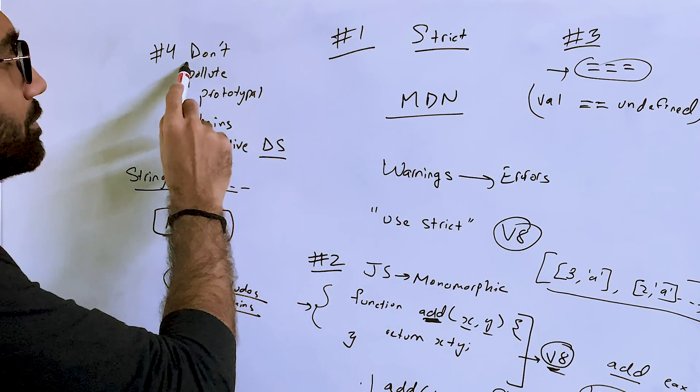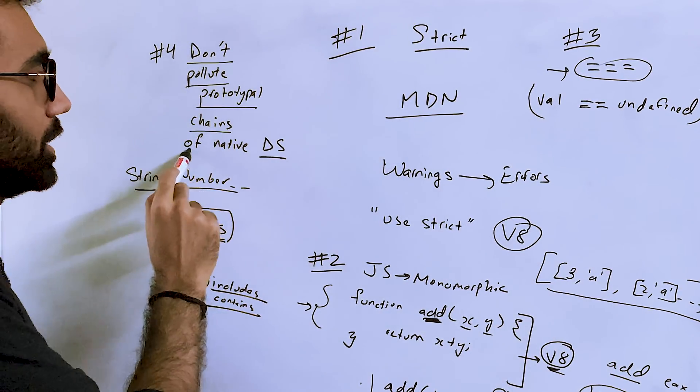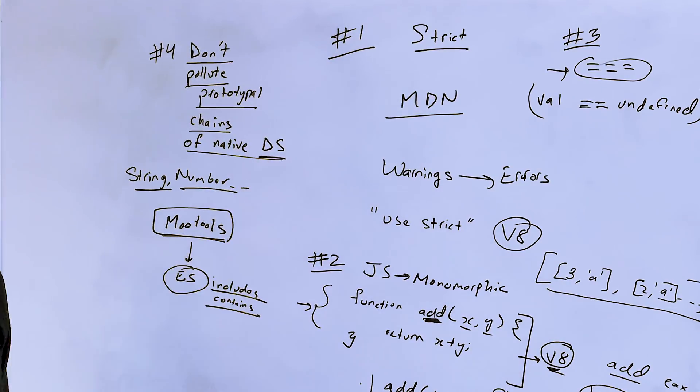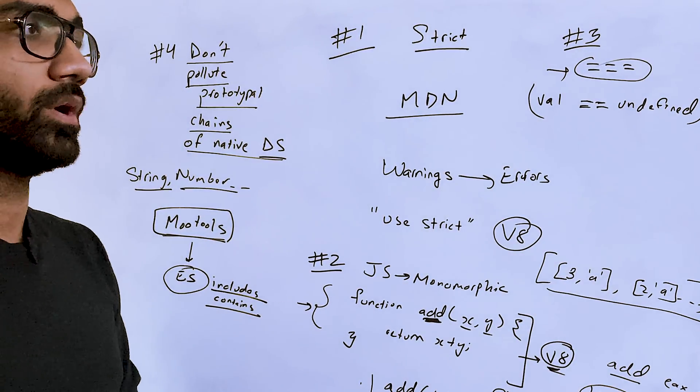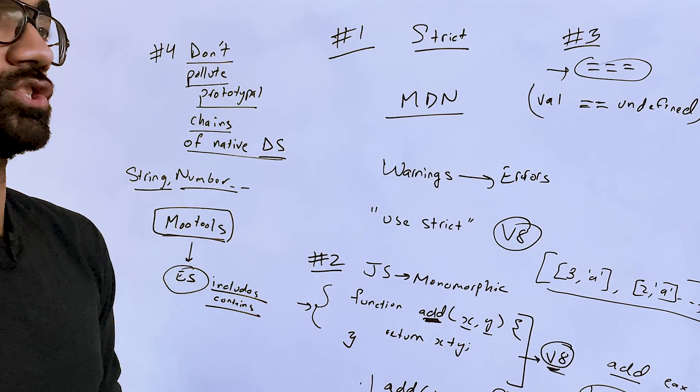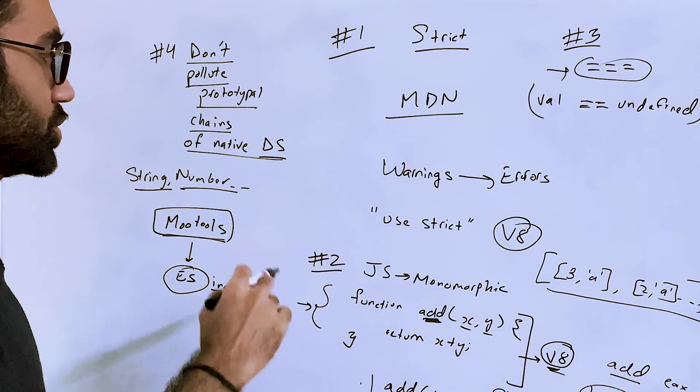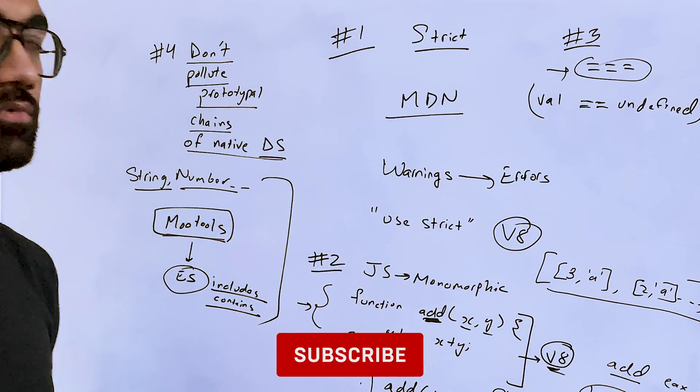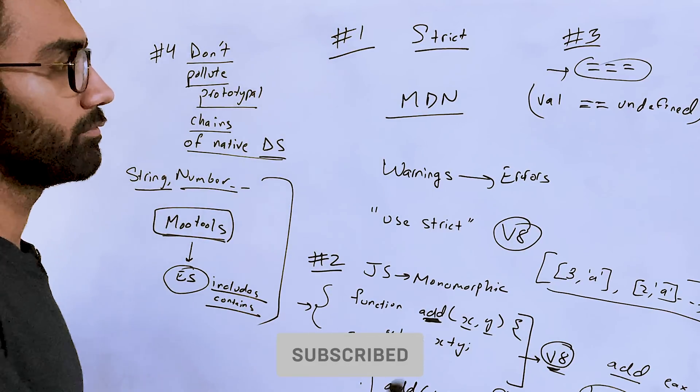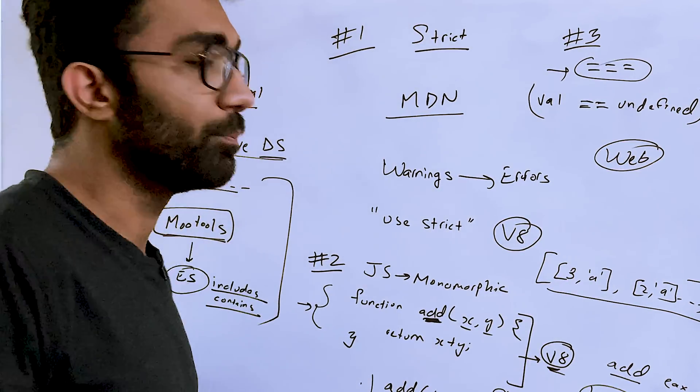So similarly, anytime you use a library or you do it yourself where you pollute the native prototypal chain of a data structure, of a native data structure, you actually contribute to the world where we might have restrictions on what features ship to these new prototype chains.